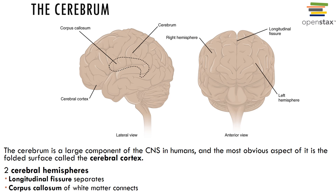Starting with the cerebrum, the cerebrum accounts for about 80% of the brain's mass. The cerebrum functions in conscious thought, memory storage and processing, sensory processing, and the regulation of skeletal muscle contractions. The surface of the cerebrum is highly folded and covered with a superficial layer of gray matter called the cerebral cortex.